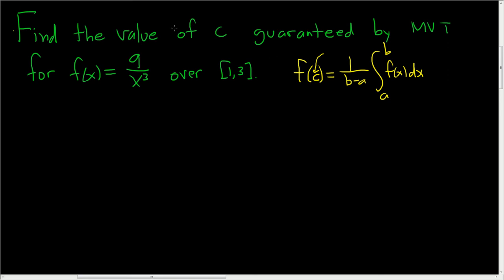So all we have to do in this problem is to find c. So we'll start by working this out here. So here b is 3 and a is 1. So we have 1 over 3 minus 1. And then we have the definite integral from 1 to 3 of this guy here, 9 over x cubed.